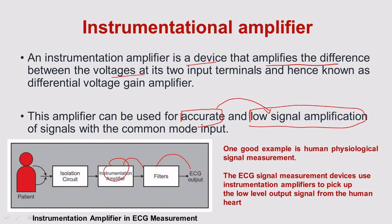There you will see the user-end output. One example given for your understanding is a biomedical application — to measure an electrocardiogram, that is an ECG signal. We want to pick up the low-level output signal generated from the heartbeat. It is sensed by the sensor, then passed to the instrumentation amplifier. The low signal must be amplified very precisely, and that work is done by this instrumentation amplifier. It is specially created for low-signal amplification.